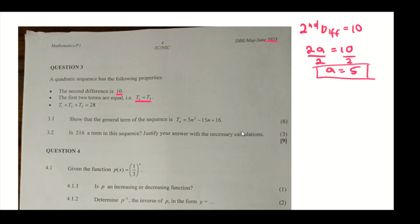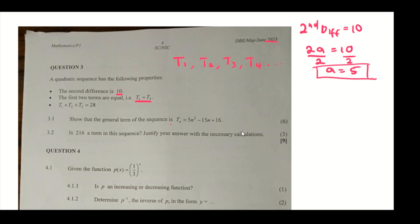So now we know the value of a. In 3.1, we are asked to find the formula. We already have a = 5. The second part of the question says that the first two terms are equal — t1 equals t2. In a quadratic sequence you have t1, t2, t3, t4 and so on. Since t1 equals t2, you can replace either one with the other.